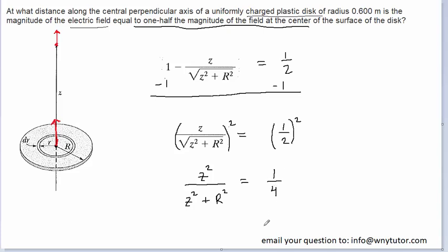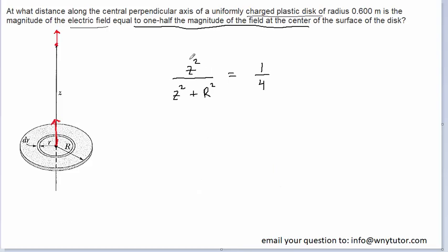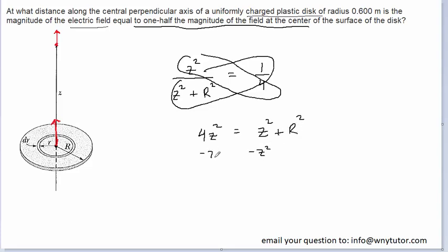Why don't we go ahead then and cross-multiply. So when we cross-multiply this direction, we're going to end up with four z squared. When we cross-multiply in the other direction, we're going to just have the z squared plus r squared. We could subtract z squared from both sides. That's going to leave us with three z squared is equal to r squared. We could then divide both sides by three, so now we have z squared is equal to r squared over three.